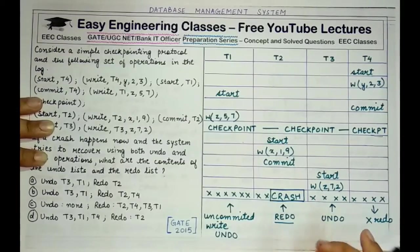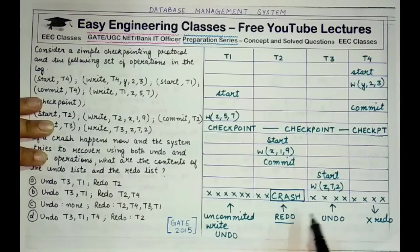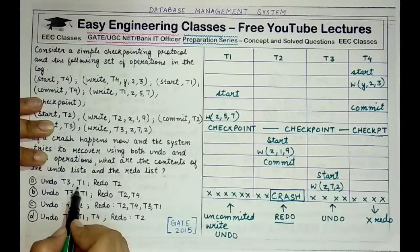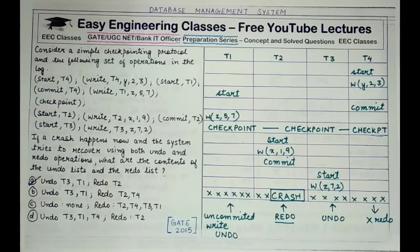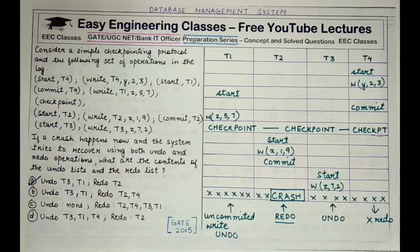So the correct answer is: T1 and T3 are in the undo list, and T2 is in the redo list — undo T1 and T3, redo T2. This is the correct option, which is option A. That's all for today's lecture. I hope you understood this question. If you like this video, please share it with your friends and let us know in the comments if you want more such tutorials. Please subscribe to Easy Engineering Classes for more lectures on computer science subjects and preparation series for GATE, UGC NET, or Bank IT Officer exams.